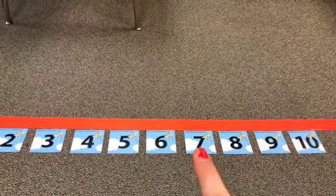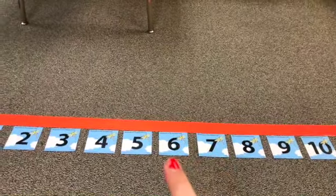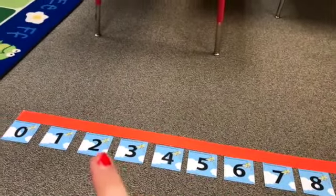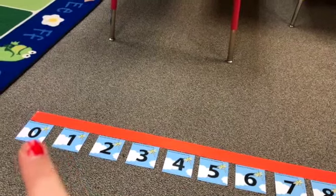Let's count backwards starting on seven. Seven, six, five, four, three, two, one, zero.